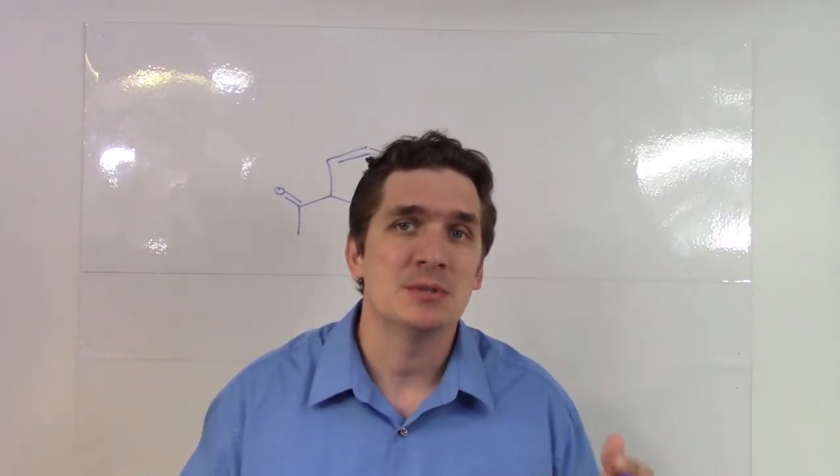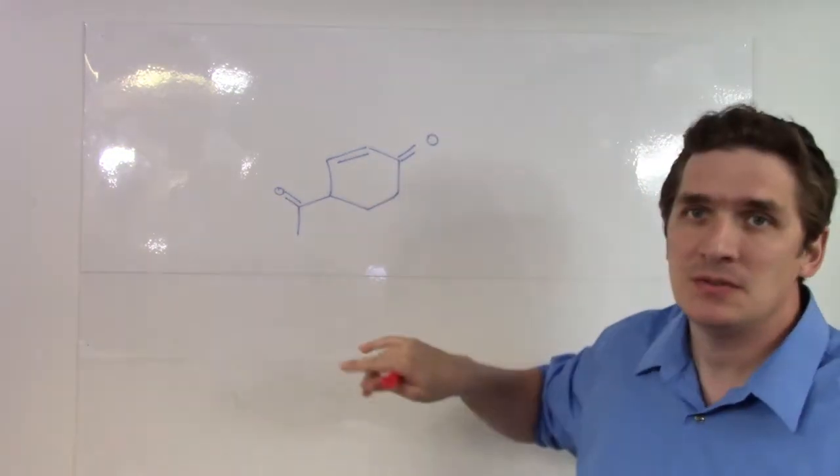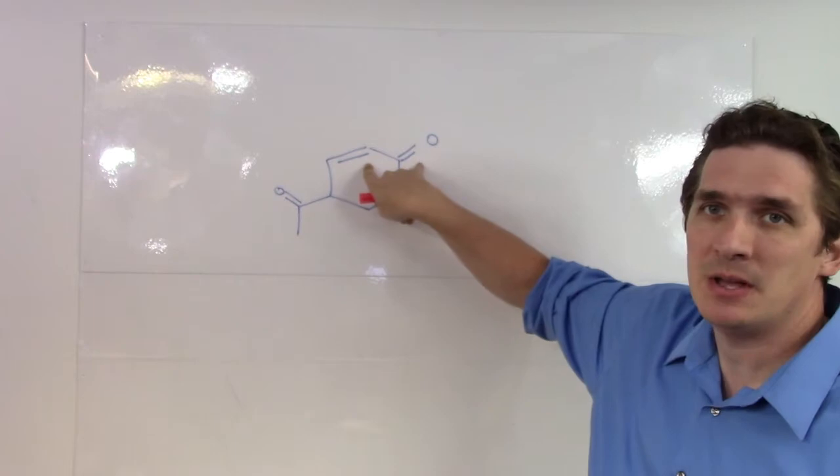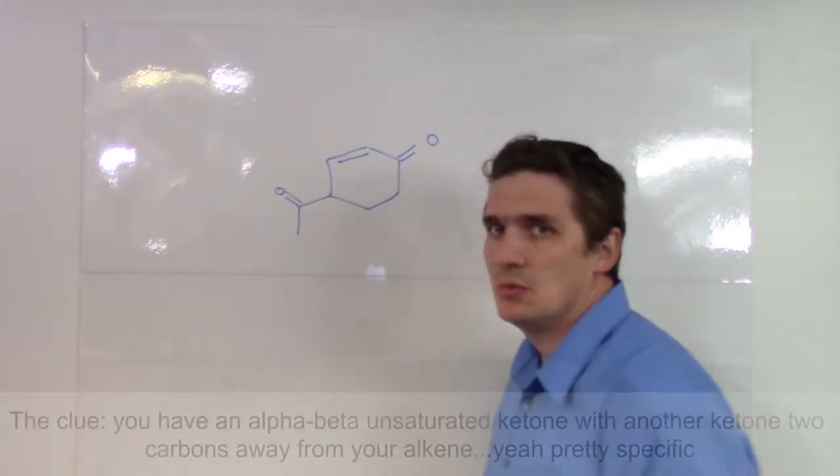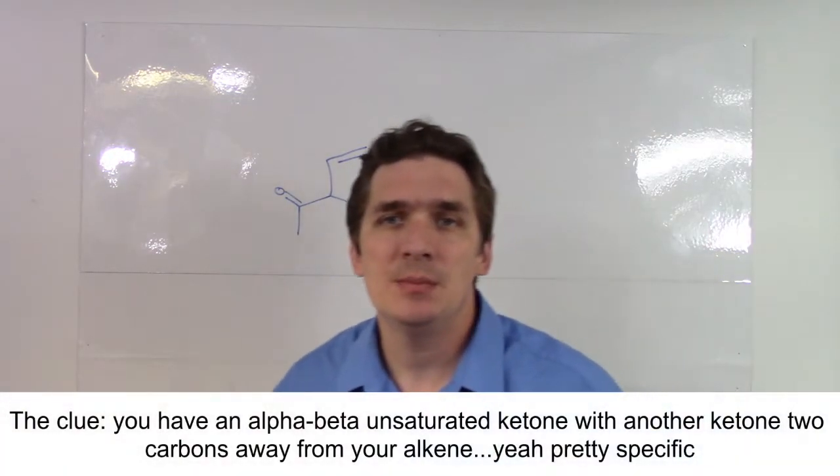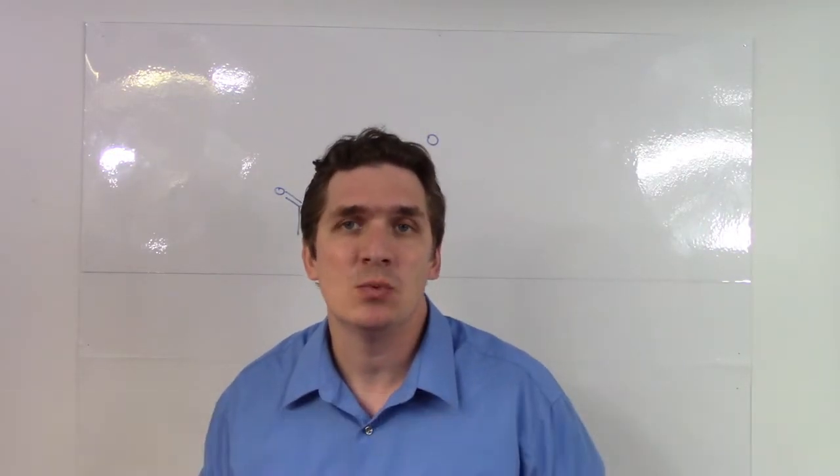So a symptom, and I like to call it a symptom, a symptom of a Robinson annulation is you have a six-membered ring containing an alpha-beta unsaturated ketone and then you've got a ketone hanging a couple carbons away. So to determine what was used to make this we had to look back at what the end product is and why it is an end product.